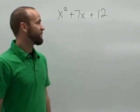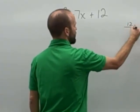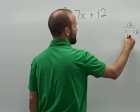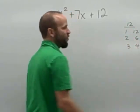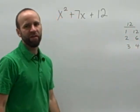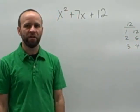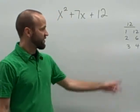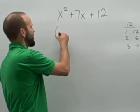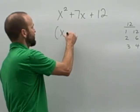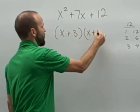If you think about the factors of positive 12, we could have 1 and 12, we could have 2 and 6, or we could have 3 and 4. Those are the three factor pairs that give us 12. One of those has a sum of 7, namely 3 and 4. So the factors of this trinomial are simply x plus 3 times x plus 4.